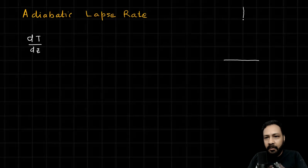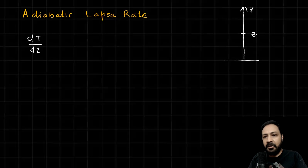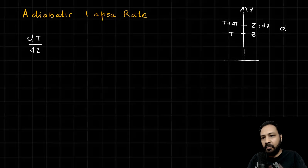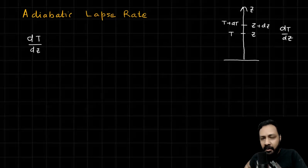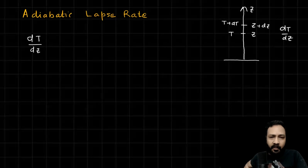At height z, temperature is T. At height z plus dz, temperature is T plus dT. So dT/dz is called the lapse rate, and this will come out to be negative because I'm taking proper signs. Now let's try to solve this.